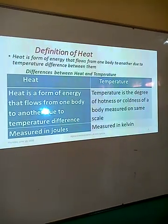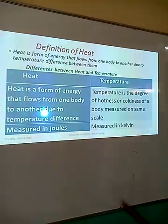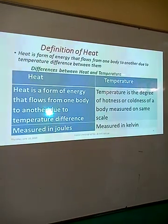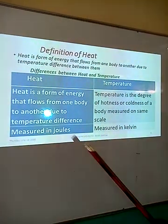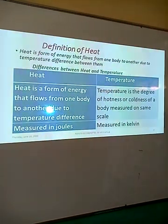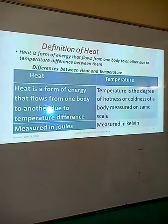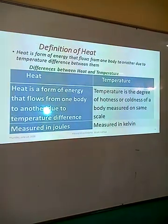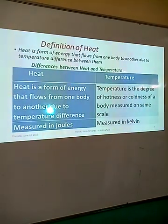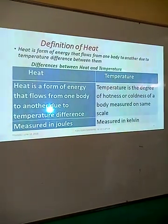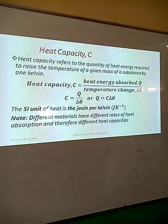We also looked at the differences between heat and temperature. From the definition: heat is a form of energy, while temperature is the degree of hotness or coldness of a body. Heat is measured in Joules — that is the SI unit. Temperature in SI units is Kelvin. Another difference is that heat cannot be measured directly using an instrument; it must be calculated, and that's what this topic involves — calculating quantity of heat using various formulas. But temperature can be measured directly using an instrument called a thermometer.